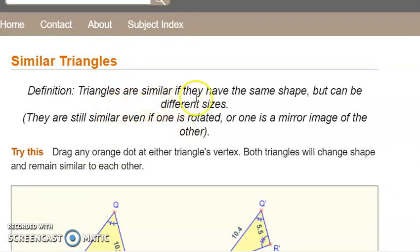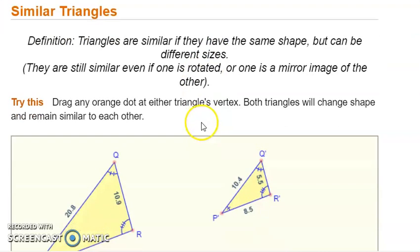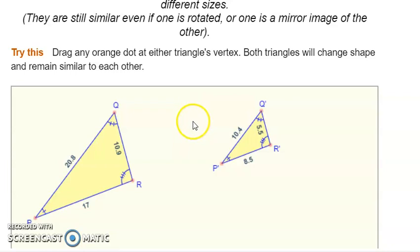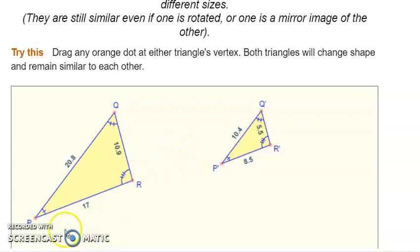So triangles are similar if they have the same shape but can be different sizes. But this definition is not accurate — you can't just say that these two triangles are similar because they have the same shape. What if they differ a bit by their shape but you can't notice that? That's why we need a more accurate definition.